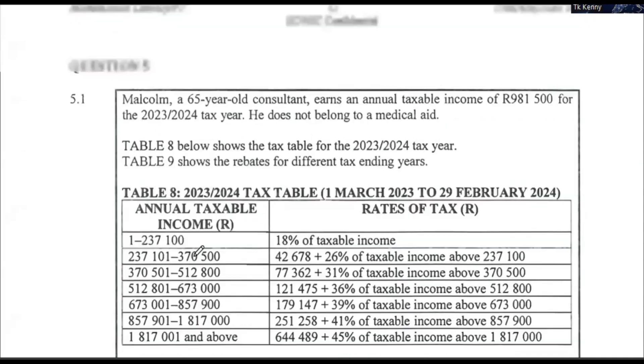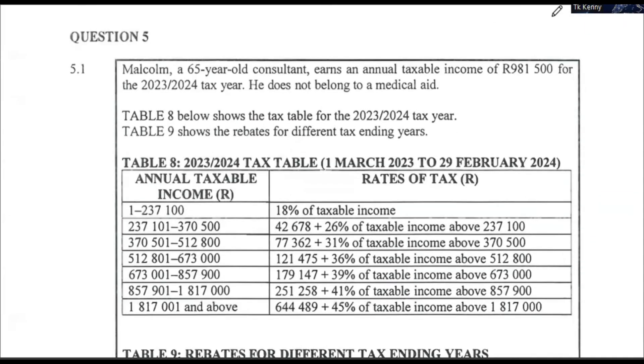Let's look at question number five. Malcolm, a 65-year-old consultant with an annual taxable income of R981,500 for the year 2023 to 2024.